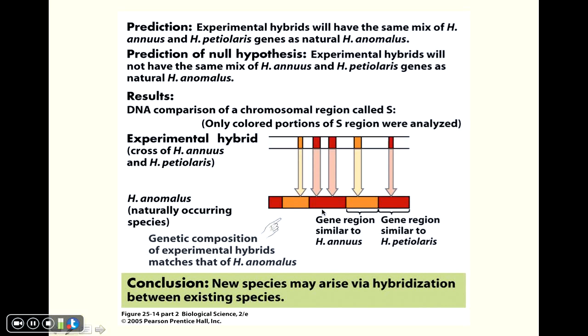So, good supporting evidence that, indeed, that Helianthus anomalus, naturally occurring out in the environment, is likely produced as a result of hybridization between those two other species of sunflowers. So, again, just another way, one example in which new species are thought to arise through hybridization. So, that concludes our discussion of the formation of species.